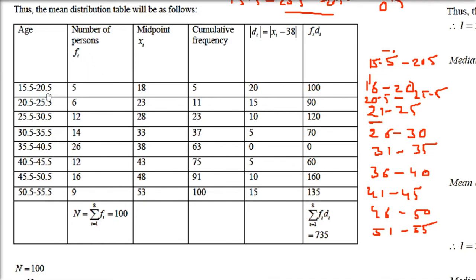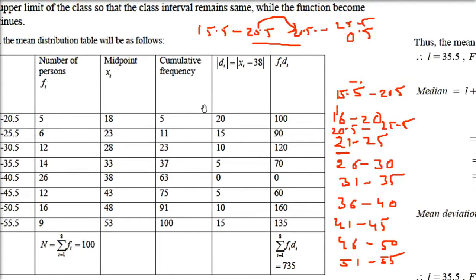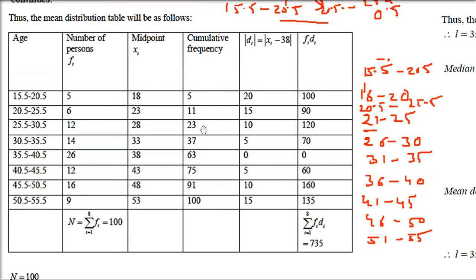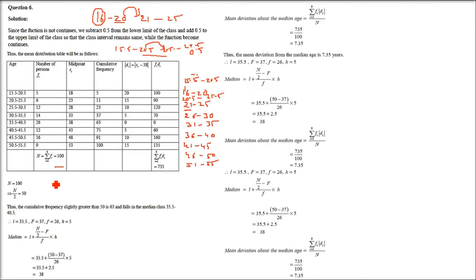With the adjusted continuous classes, find midpoints Xi (lower+upper)/2, build cumulative frequency (total = 100). For median: N/2 = 50, which lies between cumulative frequencies 37 and 63. Median class has L = 35.5, capital F = 37, f = 26, H = 5. Substituting: Median = 35.5 + (50−37)/26 × 5 = 38.